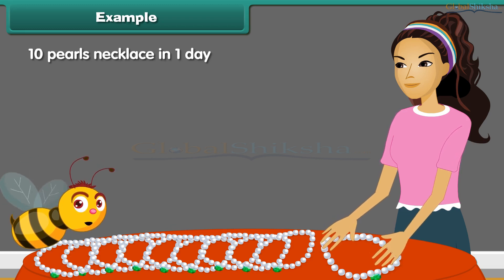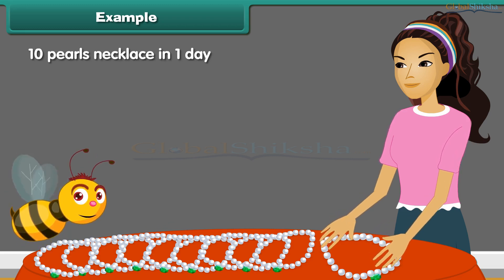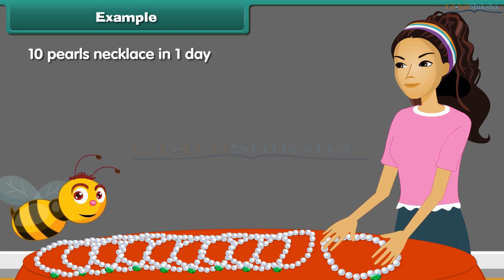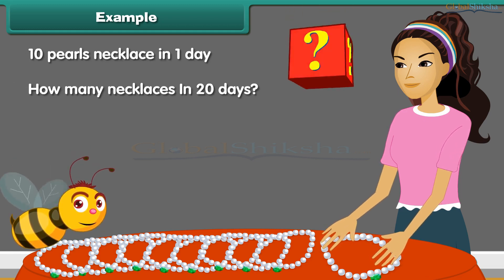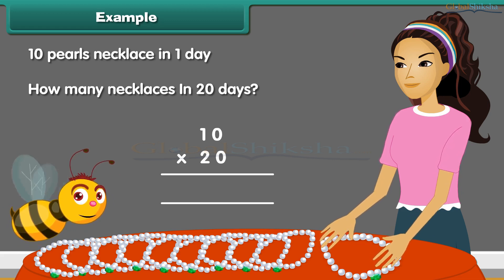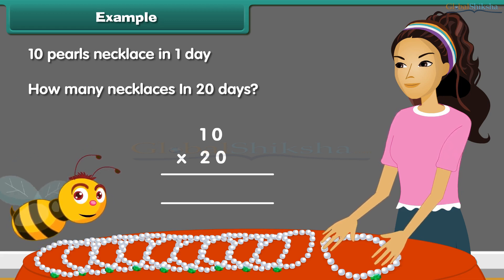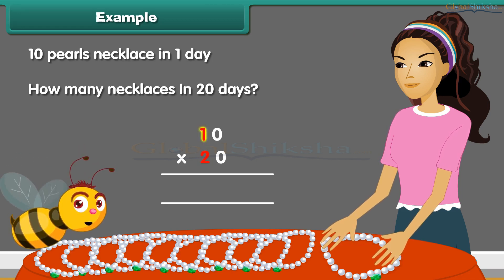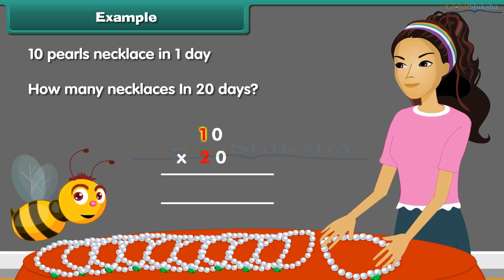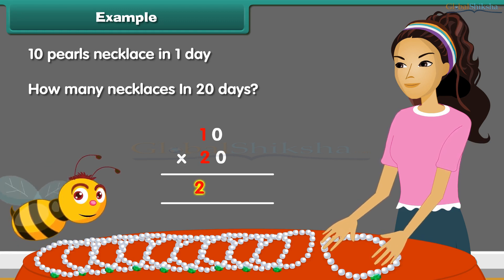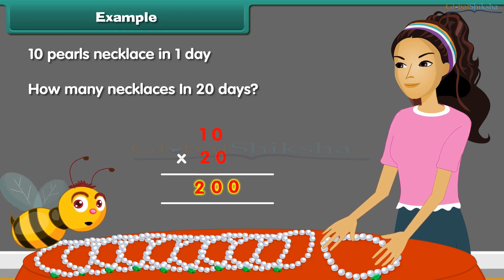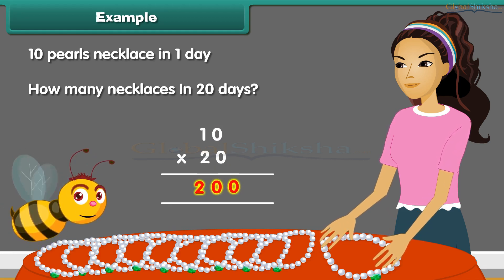Dinah makes 10 pearl necklaces in one day. In 20 days, she will make how many necklaces? We need to multiply 10 with 20. Step 1: Multiply the numerals without zeros, 2 multiplied by 1 is equal to 2. Step 2: Count and add the number of zeros toward the right side of the answer. In this case, we have two zeros. Thus, the final answer becomes 200.